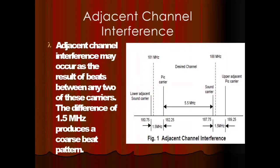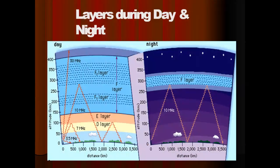Adjacent channel interference may occur as a result of beats between any two carriers. A difference of 1.5 MHz produces a co-speed broadband interference. This diagram shows adjacent channel interference layers during daytime and nighttime. According to the atmosphere, the layer columns change, and heights vary between day and night.